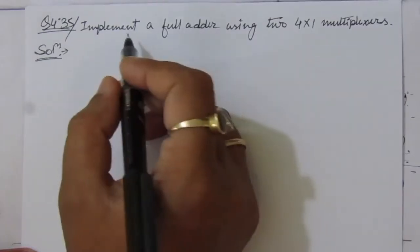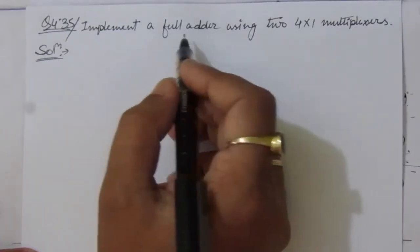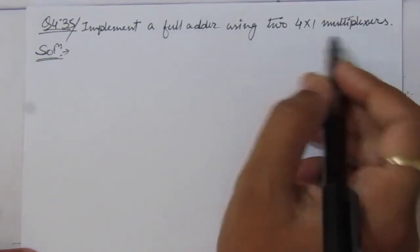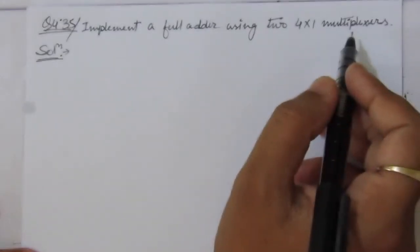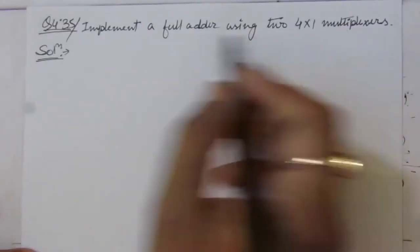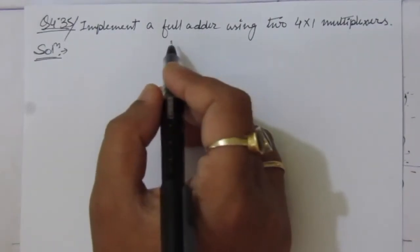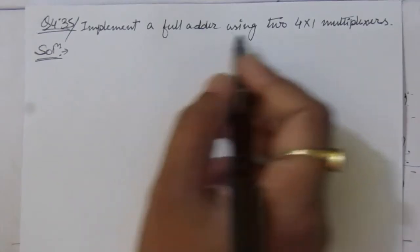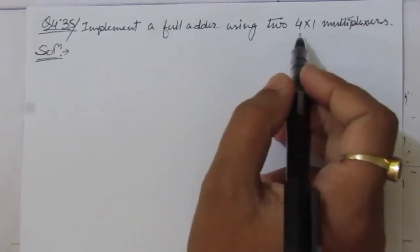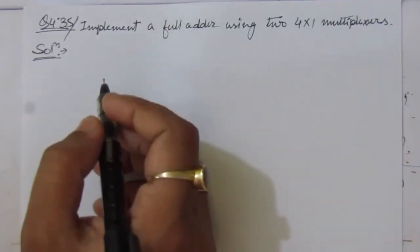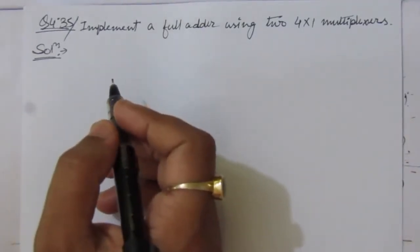The problem is to implement a full adder using 4-to-1 multiplexers — that is, two 4-to-1 multiplexers to realize a full adder. To realize a full adder using two 4-to-1 multiplexers, first of all we have to make the truth table.